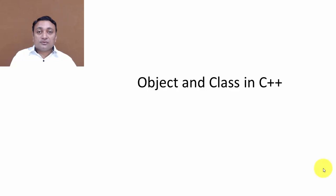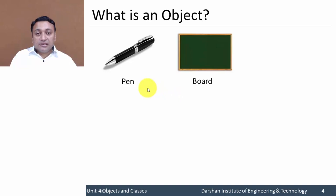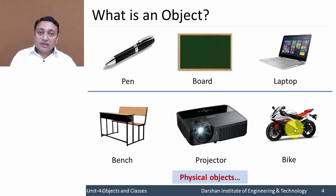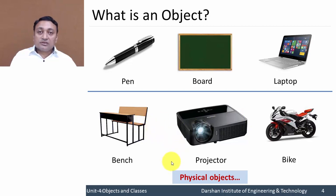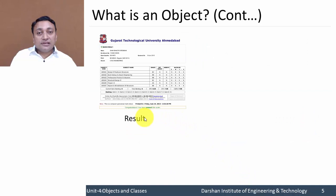Let us discuss what is an object. An object is any real-world entity like a pen, board, laptop, any vehicle, any electronic device, bench, or table. These all are physical objects.